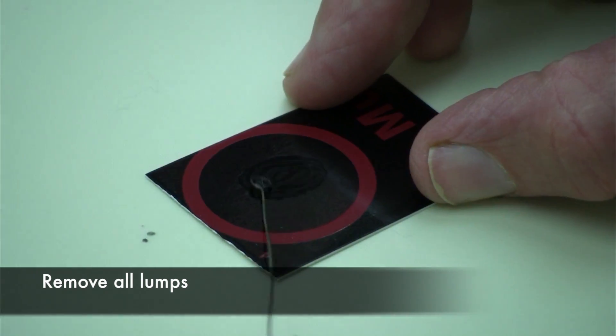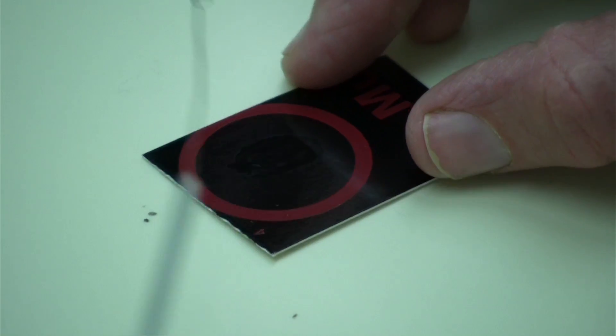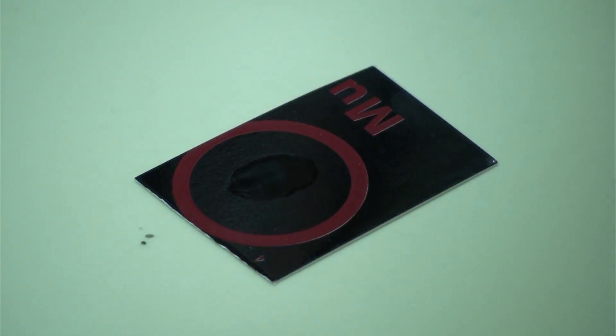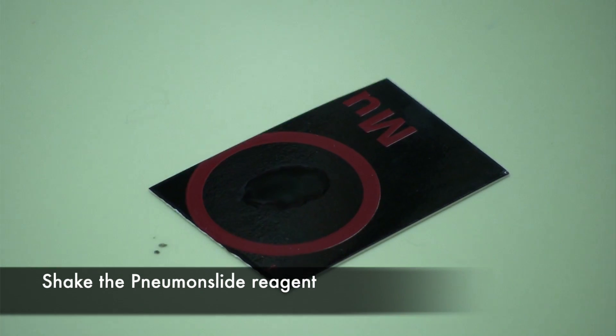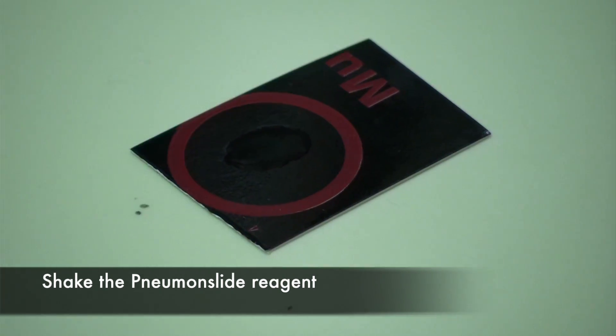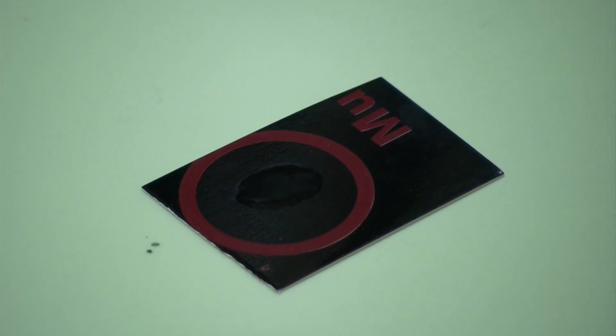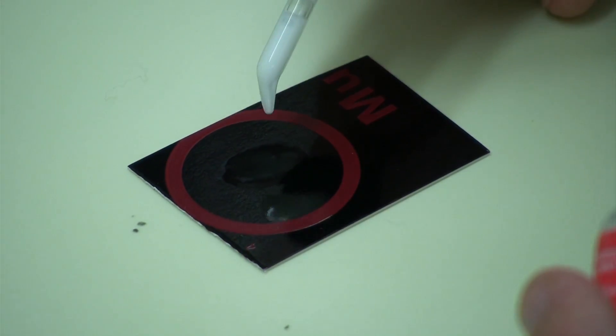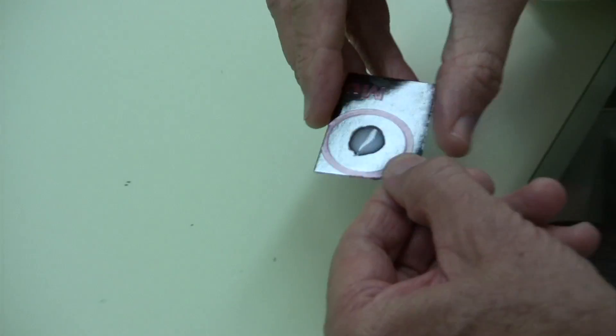Once you do that, shake the reagent, the pneumoslide reagent, shake it first. You're going to add one drop onto your slide and you're going to rock the slide for about 10 seconds or so.